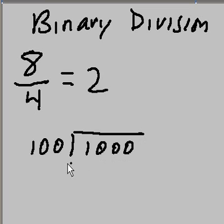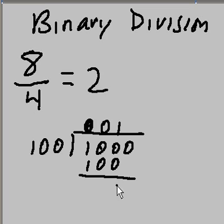So, 100 into 1 goes 0 times. 100 into 10 goes 0 times. 100 into 100 goes once. 1 times 100 equals 100, or 1, 0, 0. 1 times 0 is 0, 1 times 0 is 0, 1 times 1 is 1.